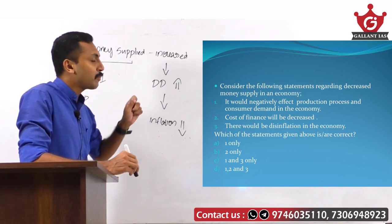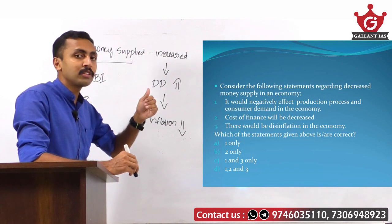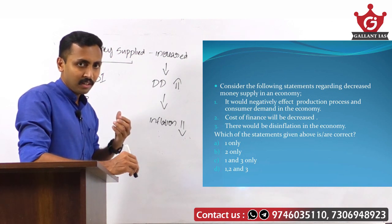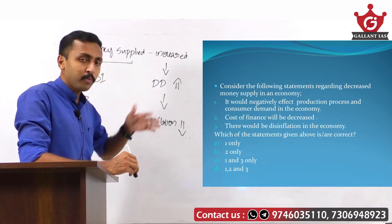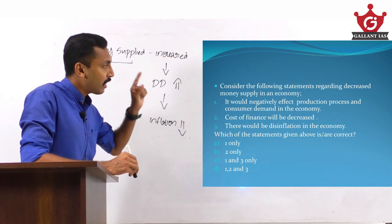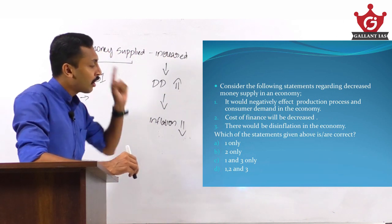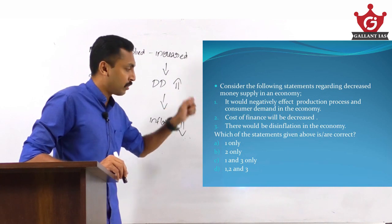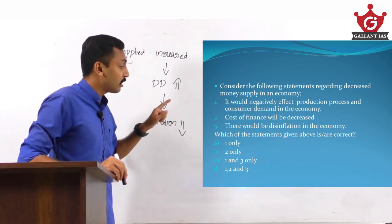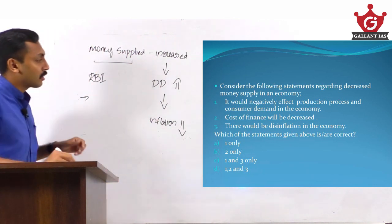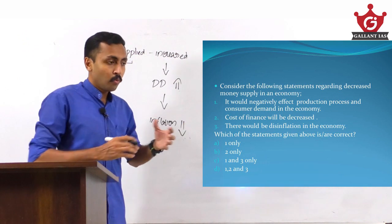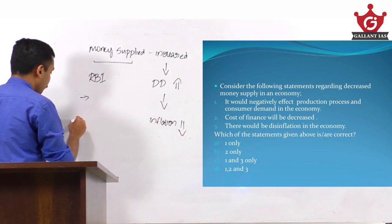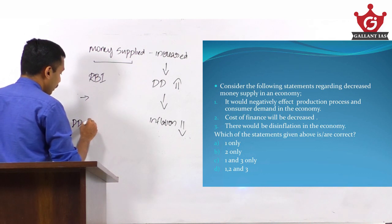First statement: it would negatively affect production process and consumer demand in the economy. That is correct. If money supply is decreased, demand for goods and services will decrease, which affects the production process. If demand is lesser, production will go down. So the first statement is correct. Using the elimination method, if the first statement is correct, you can eliminate option B, which contains only the second statement.